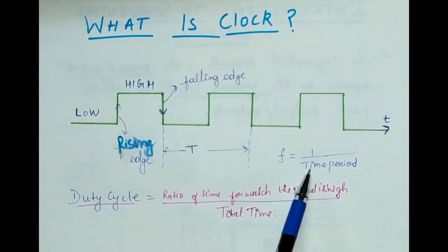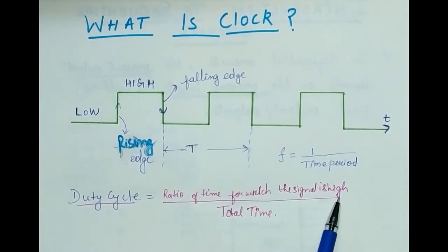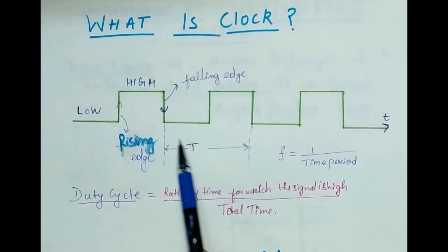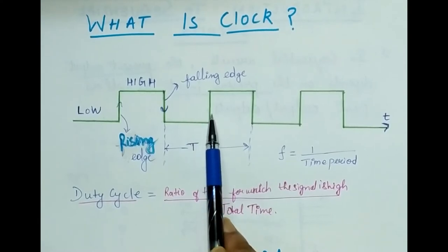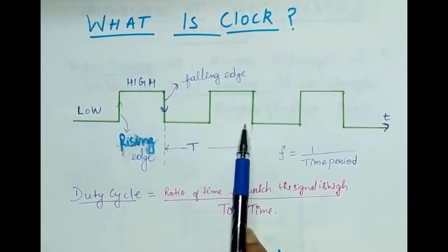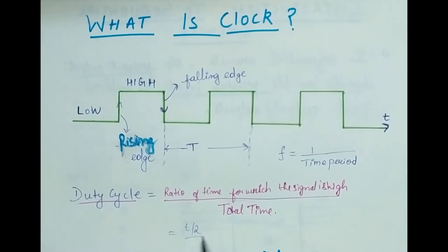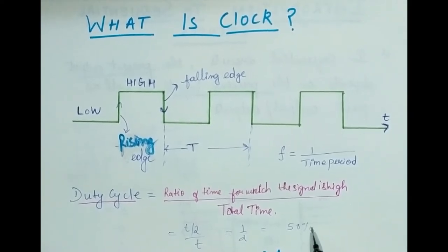Another important term we encounter when reading digital circuits, especially sequential circuits, is the duty cycle. The duty cycle is the ratio of the time for which the signal is high divided by the total time. If we take one cycle and the time period is T, then the signal is high for T/2. So the duty cycle equals T/2 divided by T, which equals 1/2 or 50%. So the duty cycle of a clock signal is 50%.